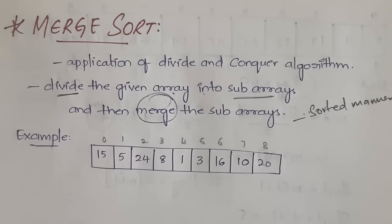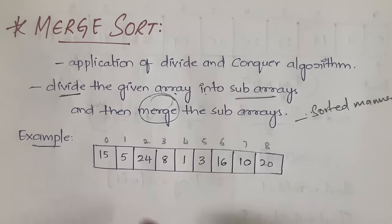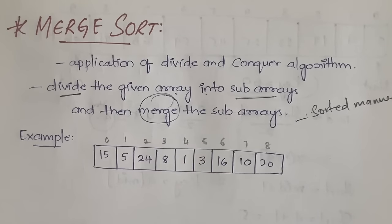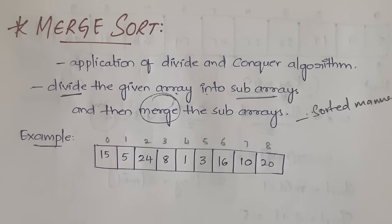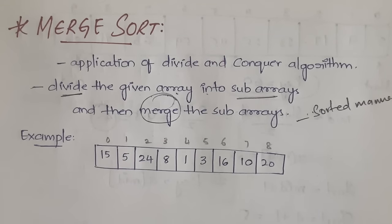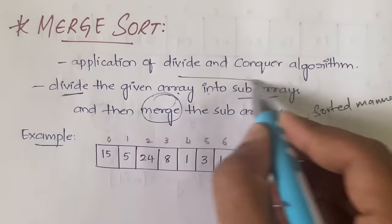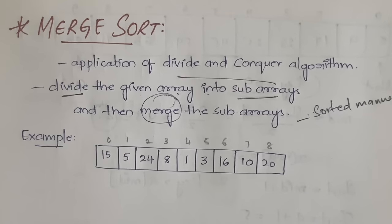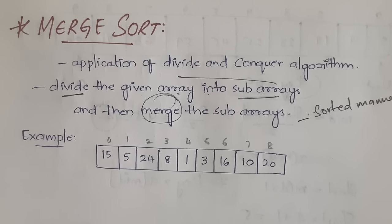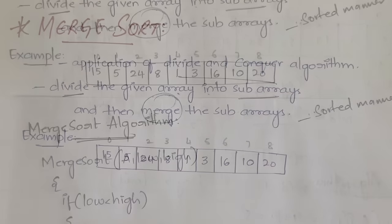We have an example array and we are going to see how the merge sort algorithm works. The basic concept is that it is an application of divide and conquer — you divide the main array into a number of subarrays, sort them, and then merge them.